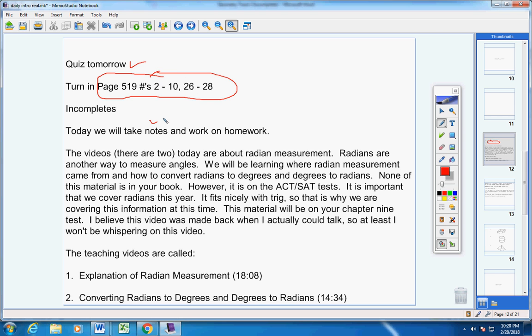Now, today we're going to take notes and work on homework. This is going to be a little confusing, Hannah, so please listen carefully. There are two videos today. They are both about radian measurement. Radians are another way to measure angles. We will be learning where radian measurement came from and how to convert radians to degrees and degrees to radians. None of this material is in your book.